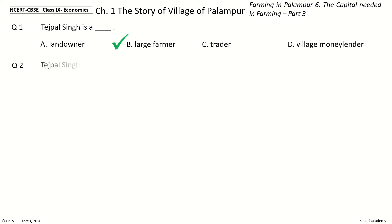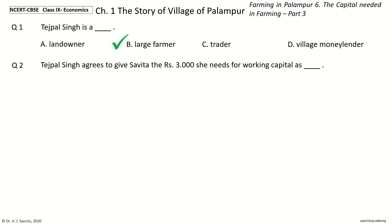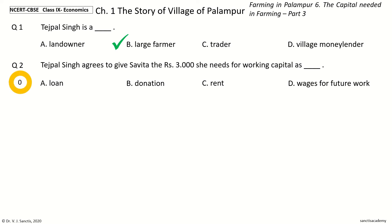Question 2. Tejpal Singh agrees to give Savita the Rs. 3000 she needs for working capital as Dash. The options are: Loan, Donation, Rent, Wages for Future Work. And the answer is Loan. So, Tejpal Singh agrees to give Savita the Rs. 3000 she needs for working capital as Loan.